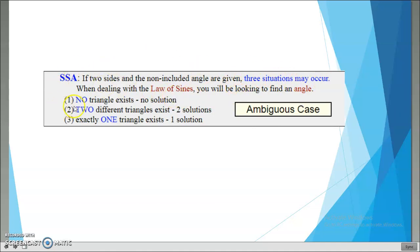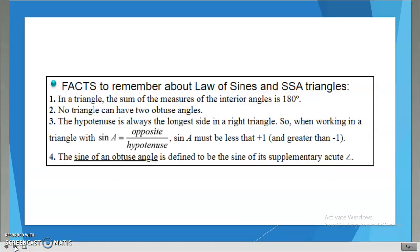If two sides and a non-included angle are given, three situations may occur when dealing with the law of sines. You can have no triangle (no solution), two triangles (two solutions), or exactly one triangle (one solution). Let's remember some facts: in a triangle, the sum of the measures of the interior angles equals 180. No triangle can have two obtuse angles. The hypotenuse is always the longest side of a right triangle. Sine of A must be less than one and greater than negative one. The sine of an obtuse angle is defined to be the sine of its supplementary acute angle.